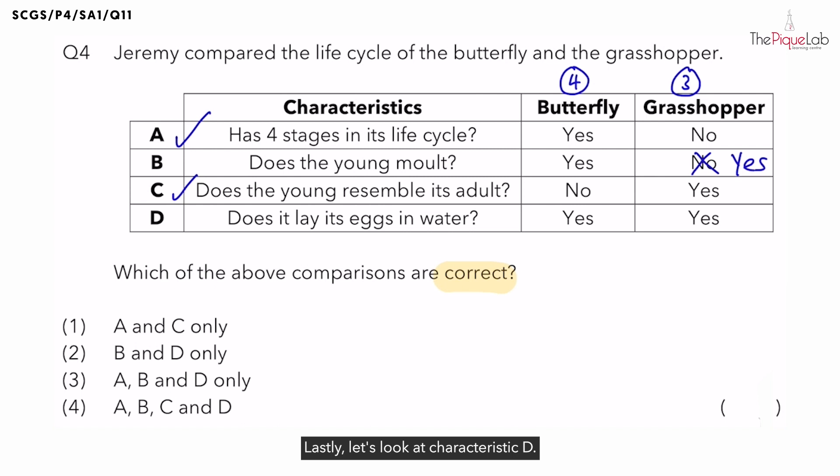Lastly, let's look at characteristic D. Do the organisms lay their eggs in water? Do butterflies lay their eggs in water? No. They lay their eggs on land. Let's also recall where grasshoppers lay their eggs. Grasshoppers lay their eggs on land as well. Hence, this comparison is incorrect for both the butterfly and the grasshopper.